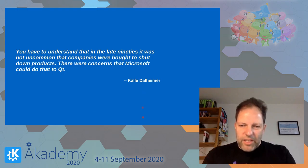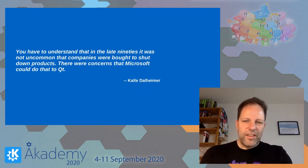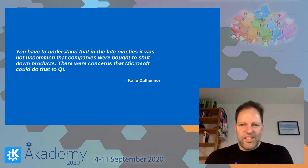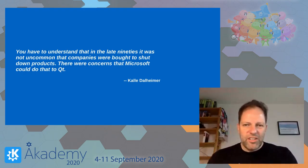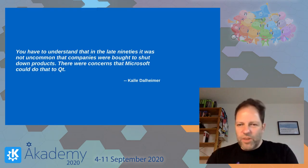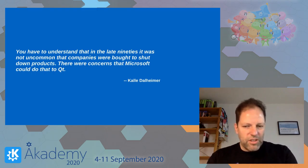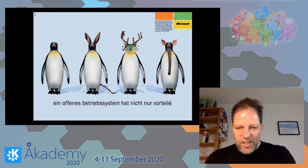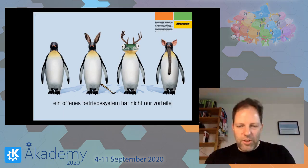And there was another threat. Kalle Dalheimer said you have to understand that at that time it was actually common that companies would buy other companies just to shut down projects. One of the fears was that Microsoft would come and actually shut down Qt in some way, as Microsoft was actively fighting Linux. This was quite real — there was even a famous advertisement from a German computer magazine where Microsoft said if you use Linux, you will get mutations and won't have it under control.